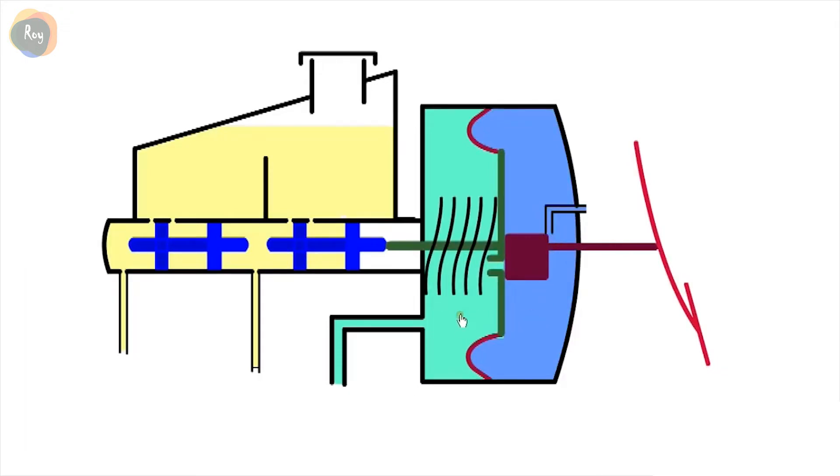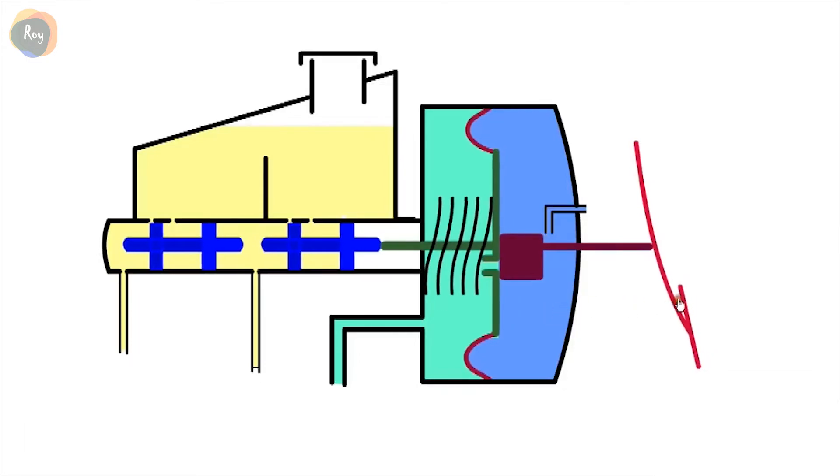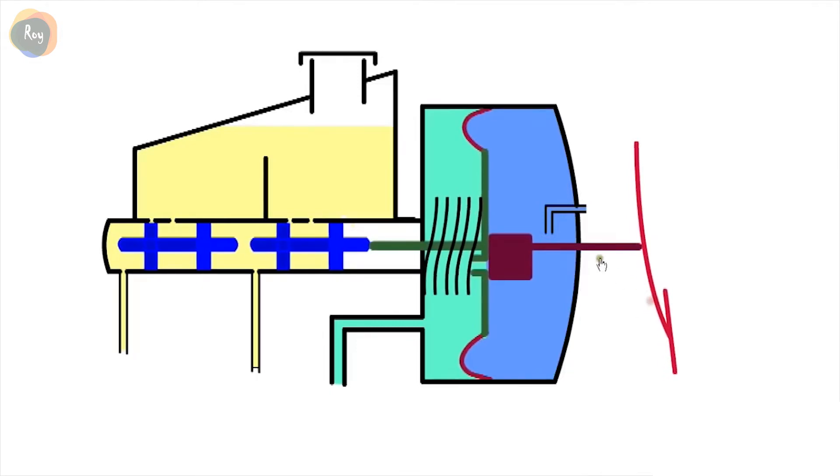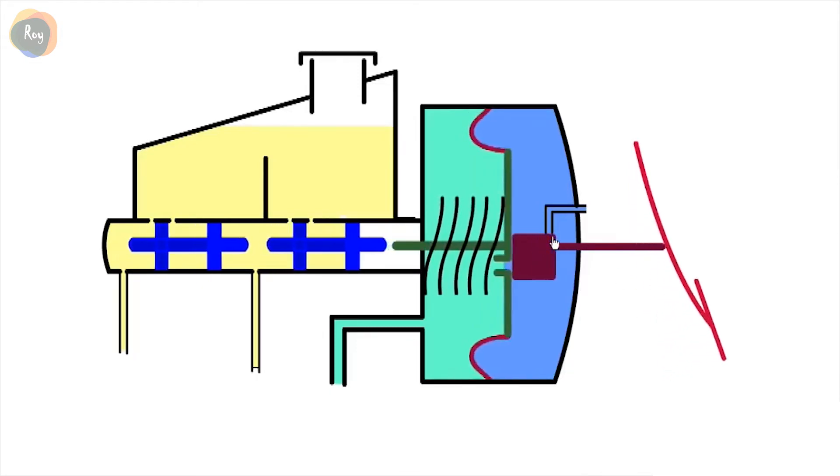Now there's a pressure differential across the diaphragm: vacuum on one side, atmospheric pressure on the other, which assists with application of the brakes. When the brake is released, the valve to atmosphere is closed and the vacuum valve is opened, restoring a vacuum on both sides.